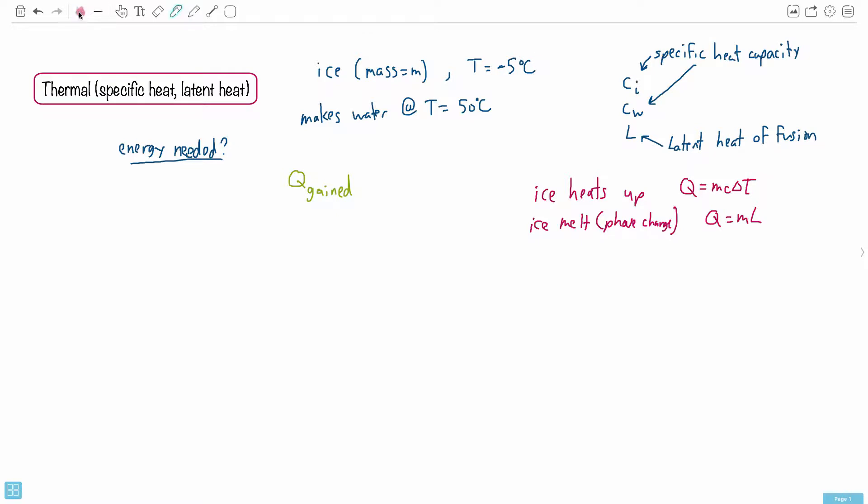These you find in your data booklet. So this one right here, Q equals MC delta T, and Q equals ML, those are the equations that you need to use. You can look them up. You don't have to memorize them. Now keep in mind though, the ice melts, that's true. But once the ice is melted, something else happens to it. Right, now you have water. And the water also heats up. So you have that happening as well. So you have another Q equals MC delta T for the water.